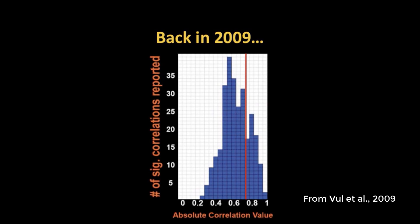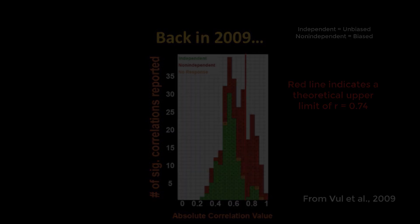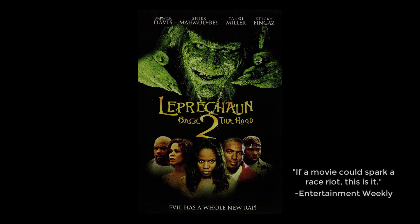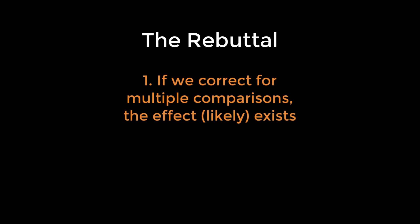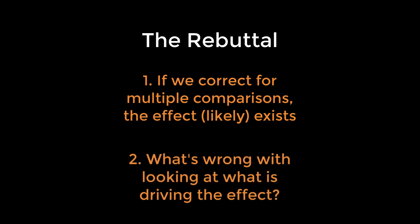In 2009, the Voodoo Correlations paper claimed that many studies were using biased analyses which led to inflated correlations, and also claimed that if they used unbiased analyses, the distribution of effects would be lower. In response, other researchers wrote a rebuttal. They argued that if you correct for multiple comparisons, the effect does indeed exist. Also, if you're doing an exploratory analysis to see where an effect is located, what's the harm in looking within the significant voxels to see what's driving the effect? Isn't it good to know what's going on?